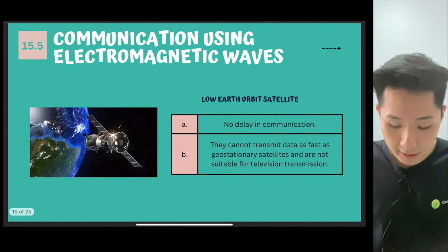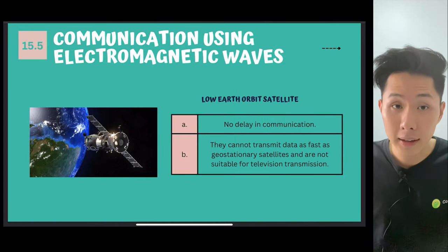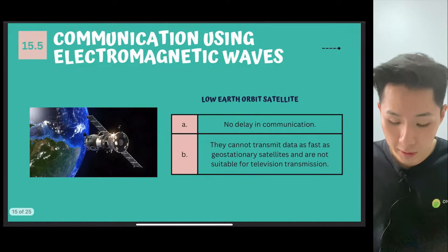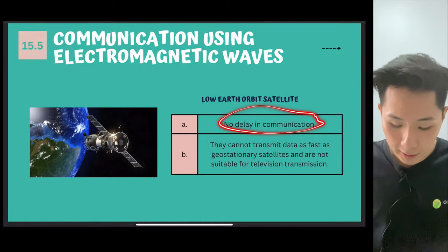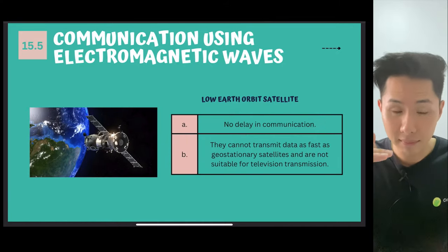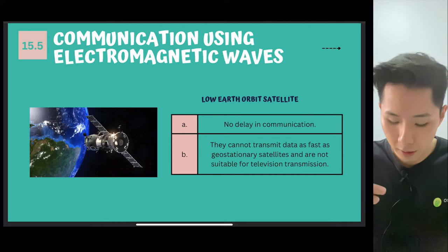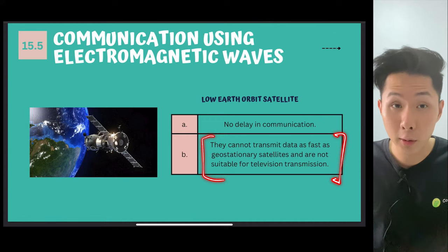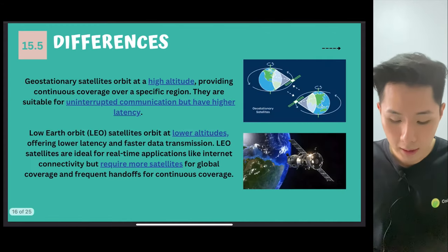Therefore, we have another satellite which is located lower than the geostationary. There's no delay in communication because they are not located very far. They cannot transmit data as fast. Therefore, they are not suitable for television transmission. So I did some research to compare both.